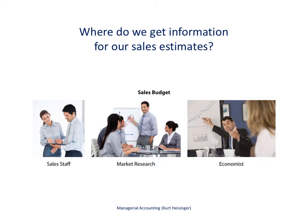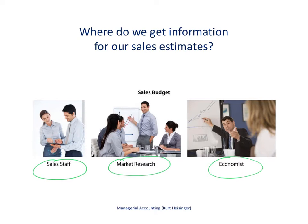This slide provides some examples of where we might get the information needed to put together the sales budget. Most companies will start with their sales staff, who have knowledge of what we would expect to sell in the coming year. We would also typically look at market research — what's happening within our industry, are sales going up or down? We might also consult an economist to find out what is happening in the overall economy, not just within our industry, but worldwide if we sell worldwide.